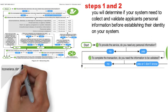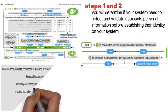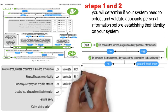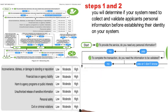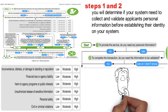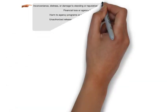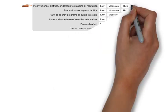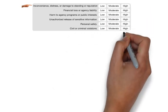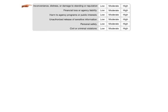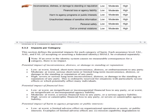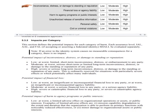In step three, if you need to obtain and validate personal information, you will need to identify the impact level for each of the impact categories listed in this chart. For the first example, the right question to ask is: if an imposter were to establish themselves in your system under someone else's identity, how much inconvenience, distress, or damage to reputation would this have on your organization? You will need to determine if it is high, moderate, or low. As a security analyst, you will not make this determination yourself, but you will guide the system owner using credible reference — Section 5.3.2 of NIST 800-63-3 defines what makes low, moderate, and high impact for each of the impact categories.